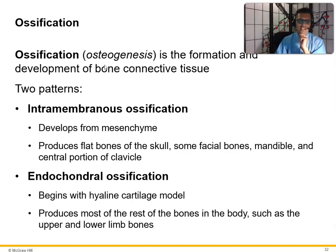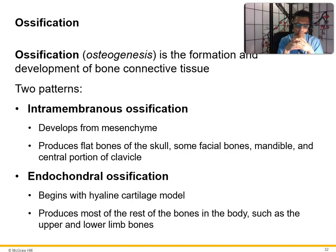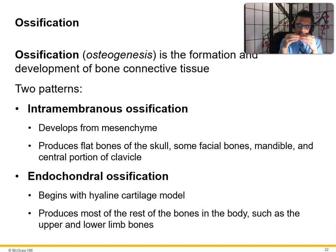Ossification — also called osteogenesis — is the formation and development of bone. There are two patterns: intramembranous ossification, which develops from mesenchyme and produces bones of the skull, some facial bones, the mandible, and the clavicle; and endochondral ossification, which begins with hyaline cartilage and develops into bone. Most bones in the body — such as the upper and lower limbs — form through endochondral ossification.